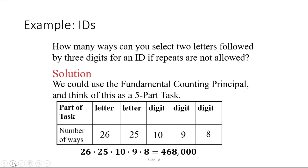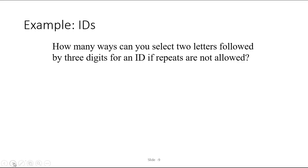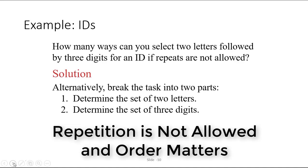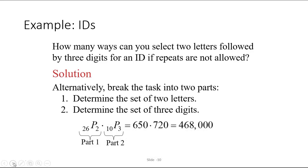The reason we're working this problem right now, though, is because we want to see how permutations could be used. So we could also break this problem down in a different way. Rather than think of it as a five-part task, we're going to think of it as a two-part task. First, determining the set of two letters that will be used, and second, determining the set of three digits and the order in which they're going to appear.